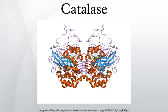Catalase is a common enzyme found in nearly all living organisms exposed to oxygen. It catalyzes the decomposition of hydrogen peroxide to water and oxygen. It is a very important enzyme in protecting the cell from oxidative damage by reactive oxygen species. Likewise, catalase has one of the highest turnover numbers of all enzymes. One catalase molecule can convert millions of molecules of hydrogen peroxide to water and oxygen each second.